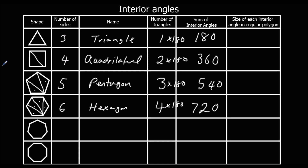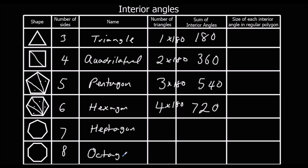See if you can finish this table. I'll go through the answers afterwards. So seven-sided and eight-sided. Seven-sided is called a heptagon — or septagon, both are fine. An eight-sided shape is an octagon.